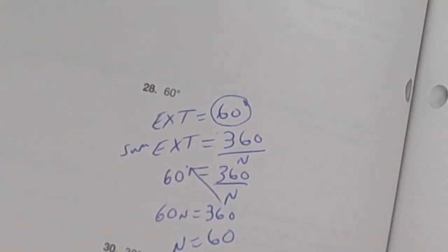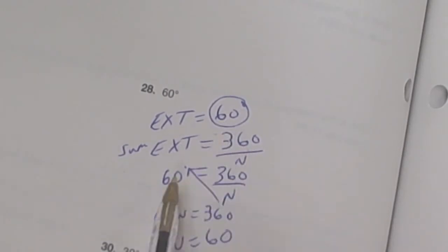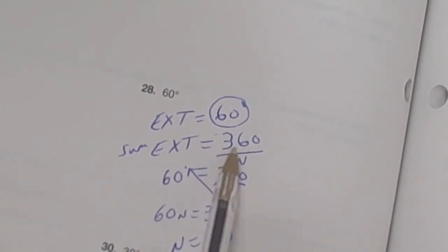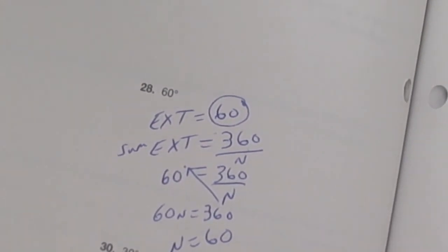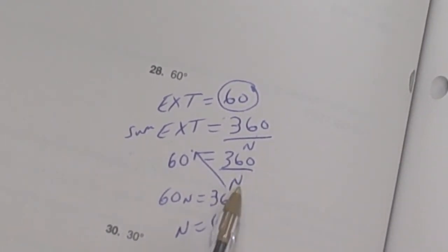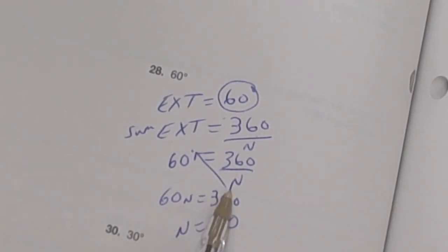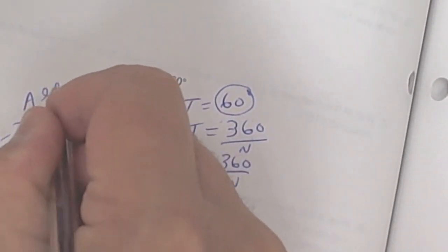The sum of all exterior angles, no matter how many sides the polygon has, is always 360 degrees. If they give you one exterior angle, divide 360 by n to make one angle on each side of the equation. The key concept: if you have one angle on one side, you must have one on the other — take the total divided by the number of sides n. Do problems 1 through 30, all of them. This is section 10.5.